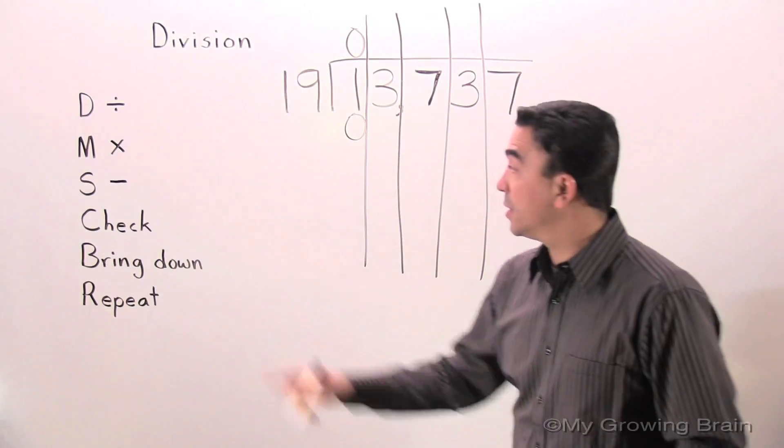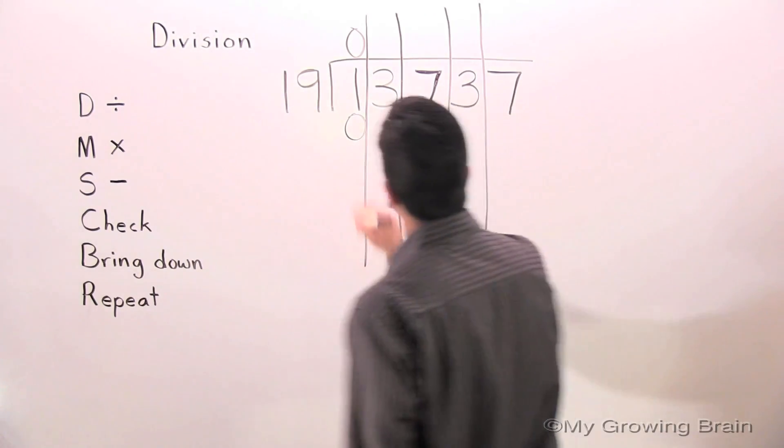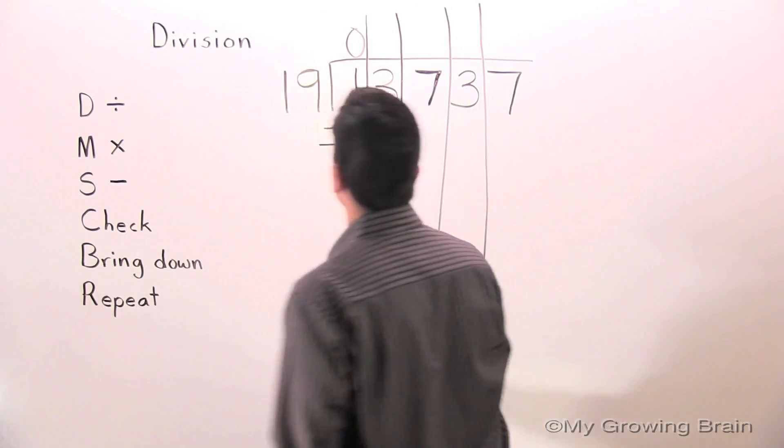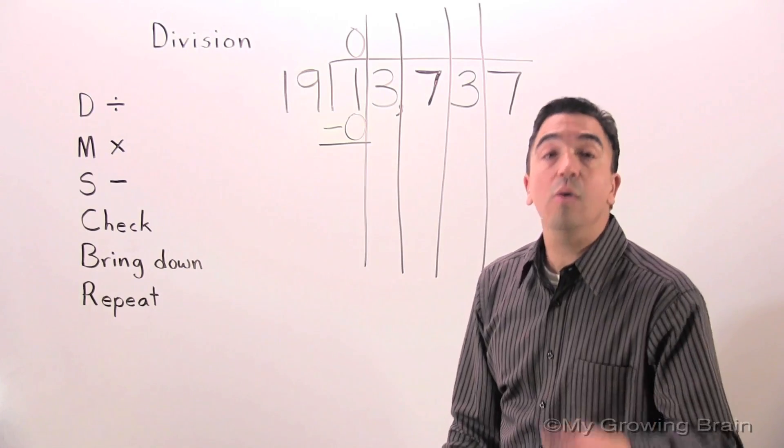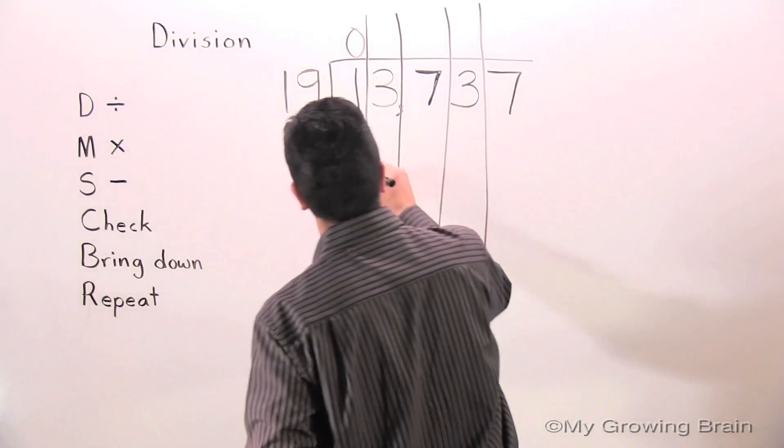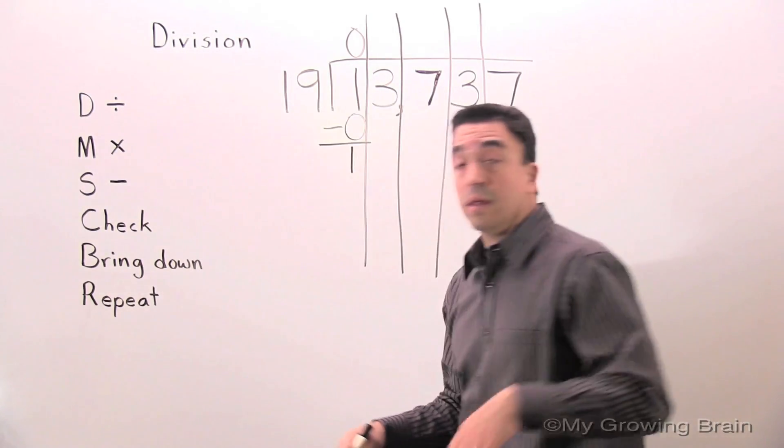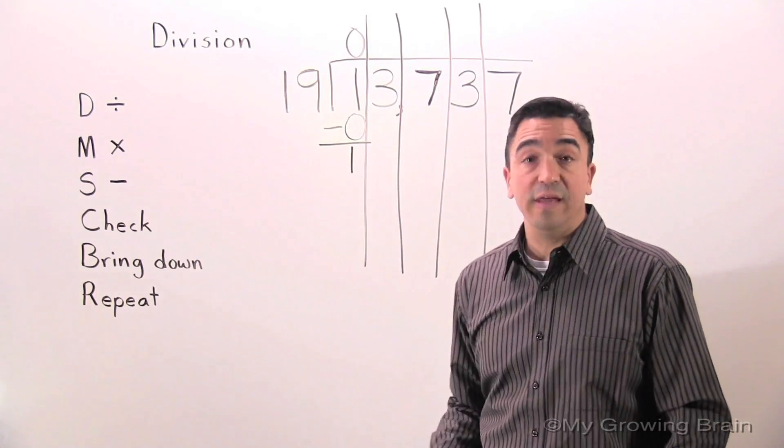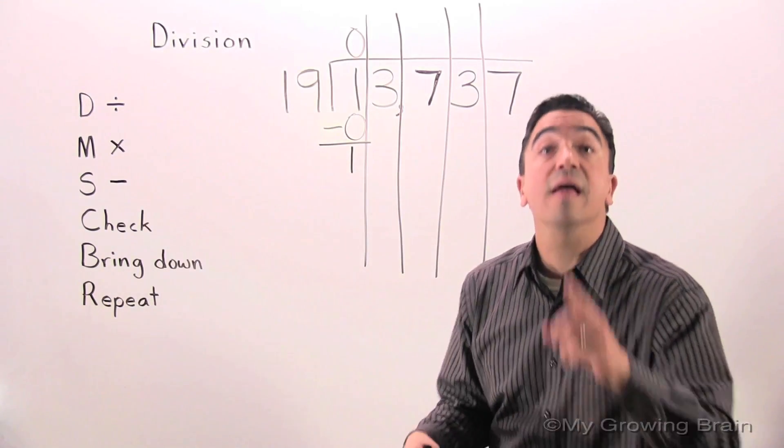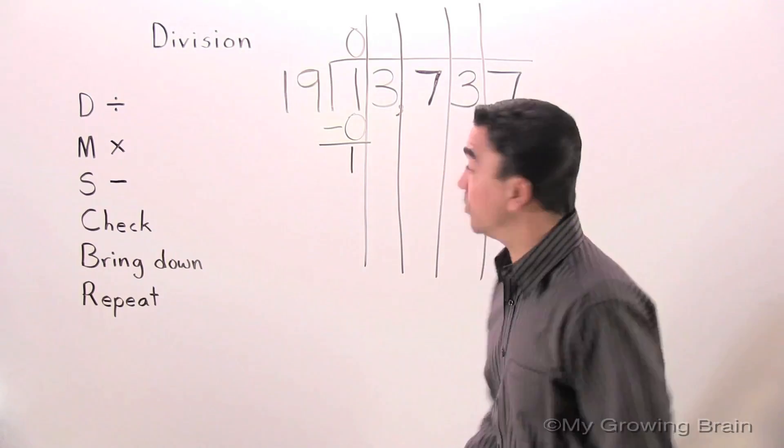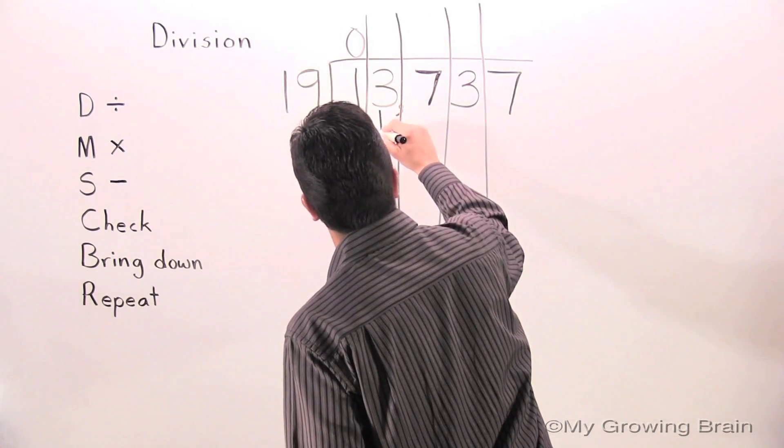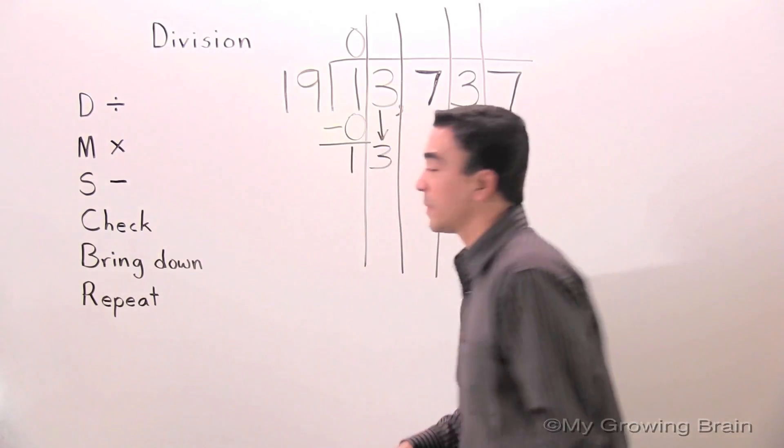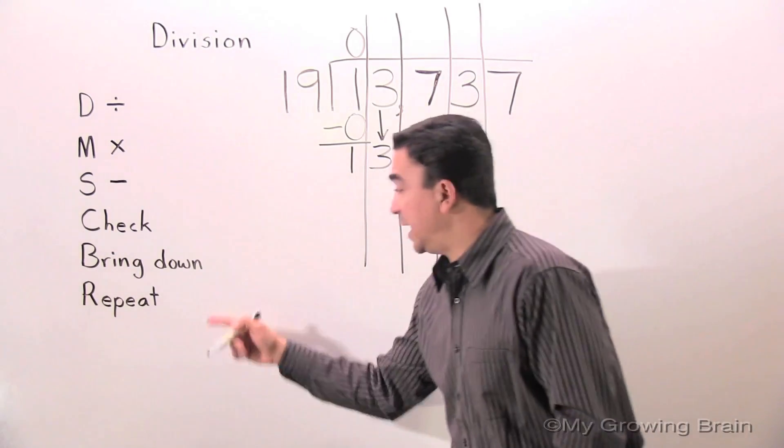Next step. Subtract. One minus zero, one. Next step. Check. One is less than 19. Keep on going. Next step. Bring down. Next step. Repeat.